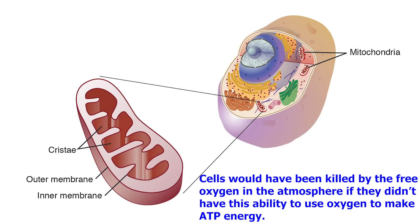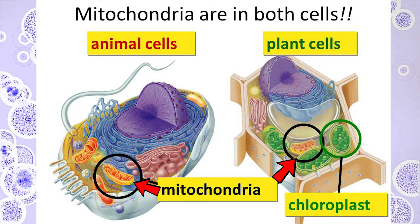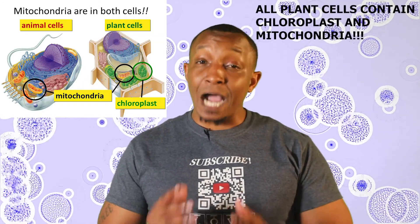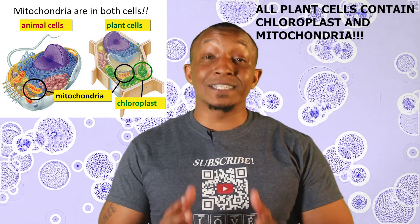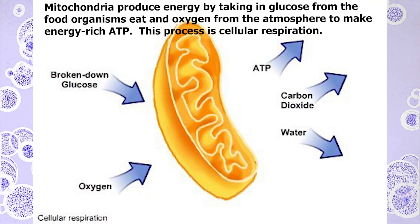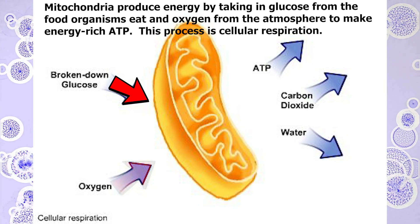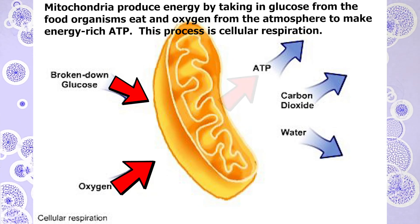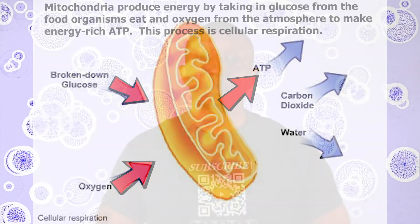Cells would have been killed by the free oxygen in the atmosphere if they didn't have the ability to use oxygen to make ATP energy. This is why all plant and animal cells contain mitochondria. To clear up a common misconception: yes, all plant cells do contain both chloroplasts and mitochondria. These mitochondria produce energy by taking in glucose from food, adding oxygen from the atmosphere, and producing energy-rich ATP. This process is known as cellular respiration.